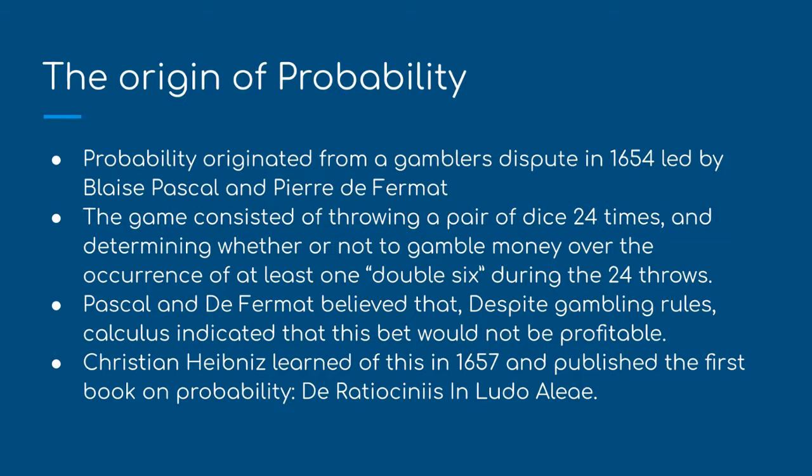The Origin of Probability. Probability originated from a gambler's dispute in 1654, led by Blaise Pascal and Pierre de Fermat. The game consisted of throwing a pair of dice 24 times and determining whether or not to gamble money over the occurrence of at least one double six during the 24 throws.